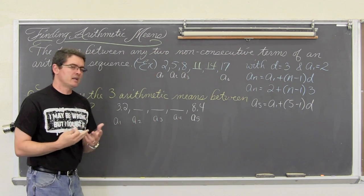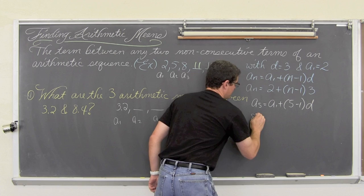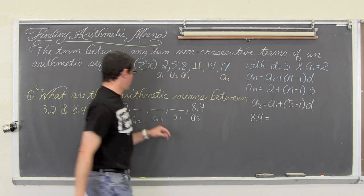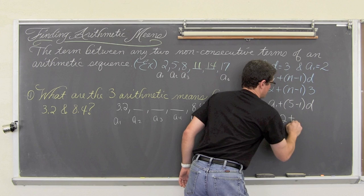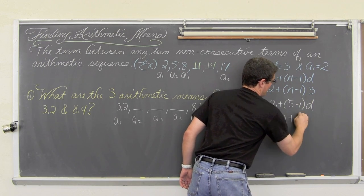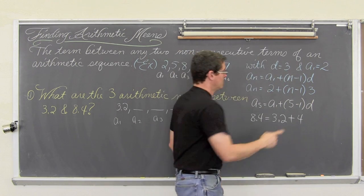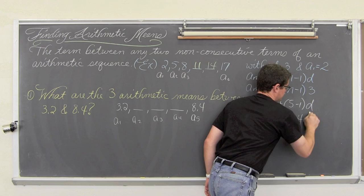Let's finish plugging in everything that we know. a sub 5 is 8.4, a sub 1 is 3.2, plus 5 minus 1 is equal to 4, and then 4d.